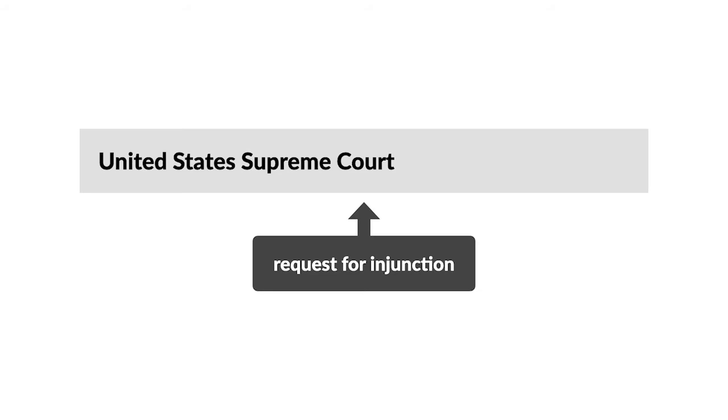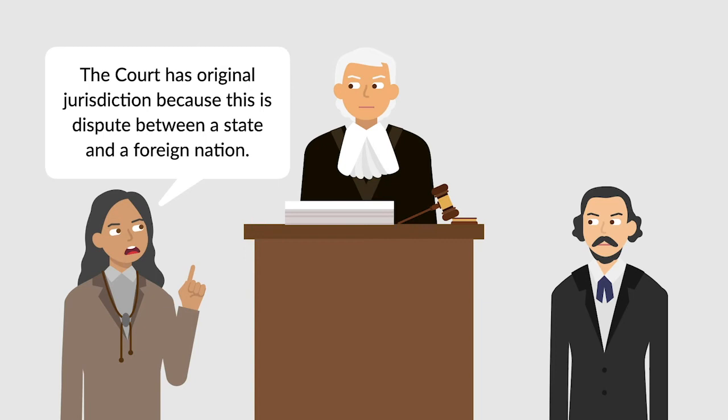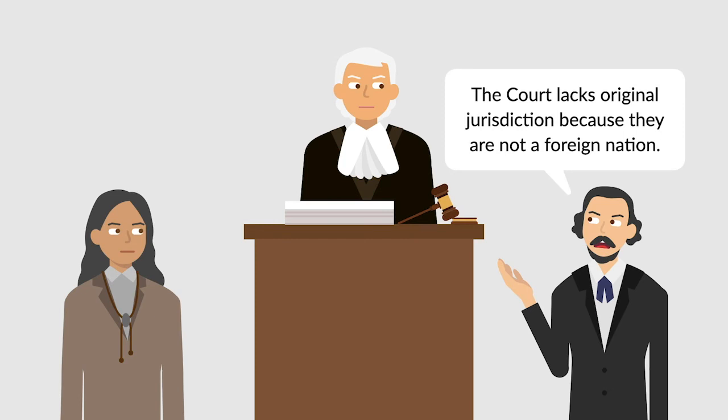The Cherokee contended that the Supreme Court had original jurisdiction under Article III, Section II of the United States Constitution, because the case was a dispute between a state and a foreign nation. Georgia argued that the court lacked original jurisdiction because the Cherokee weren't a foreign nation.